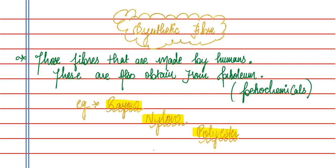Let us move on to the next topic: synthetic fiber. What is synthetic fiber? This is the fiber that humans have made themselves. These are obtained from petroleum, which we call petrochemicals. The raincoat, for example, is made from polyester, so it cannot absorb water.